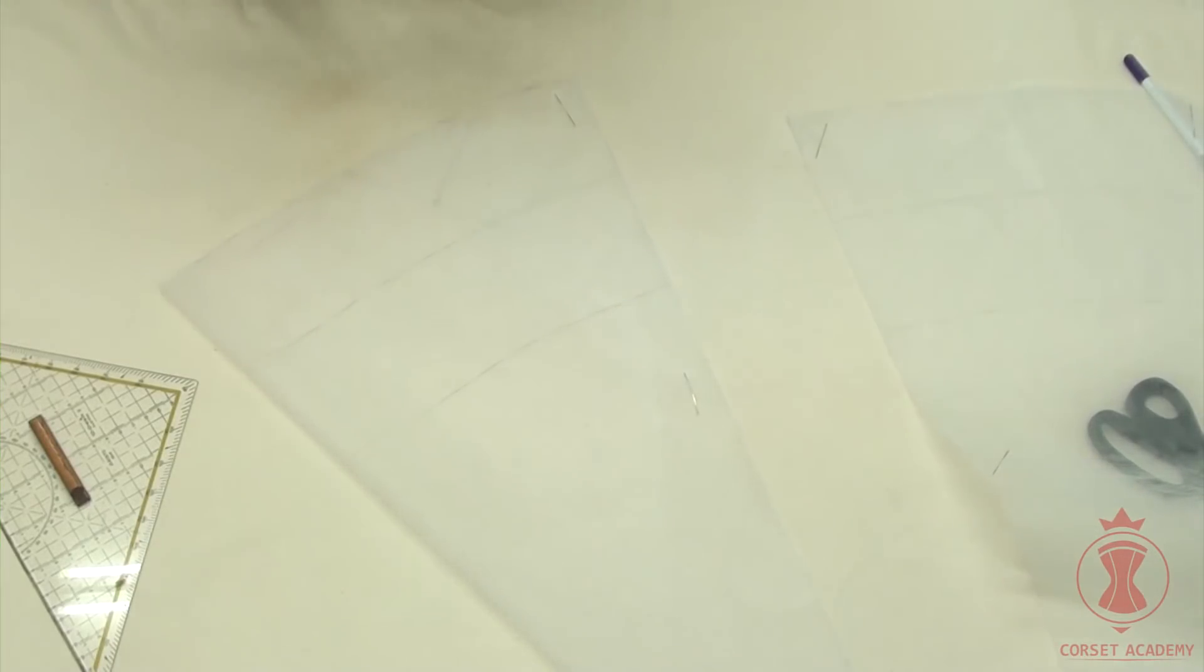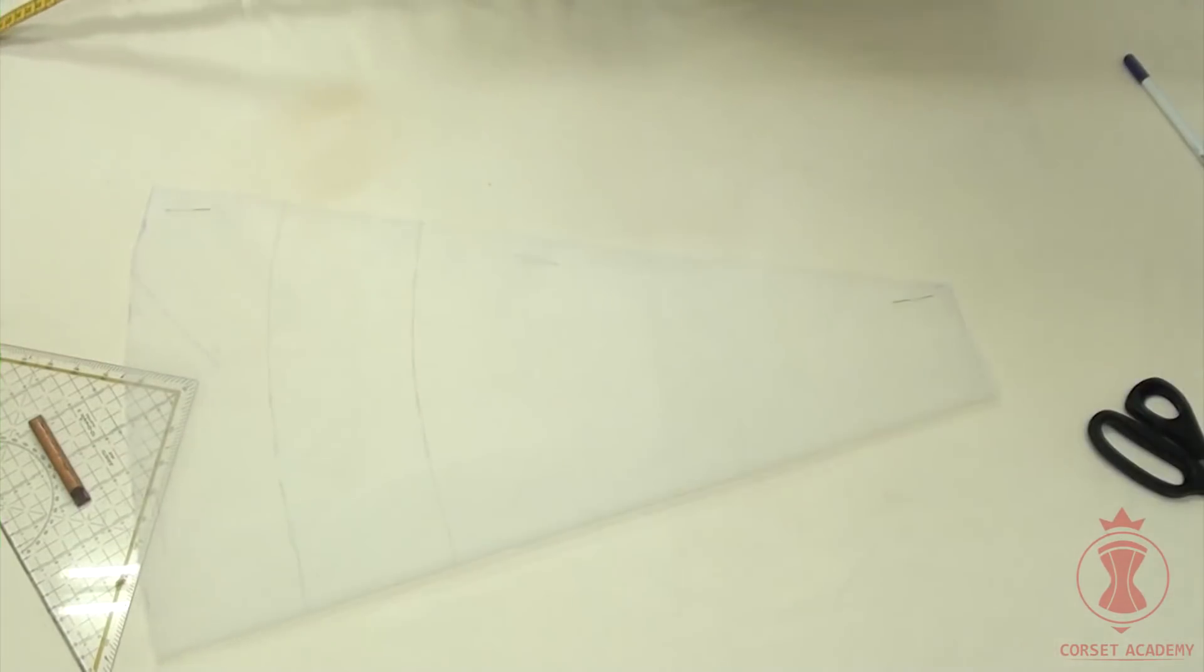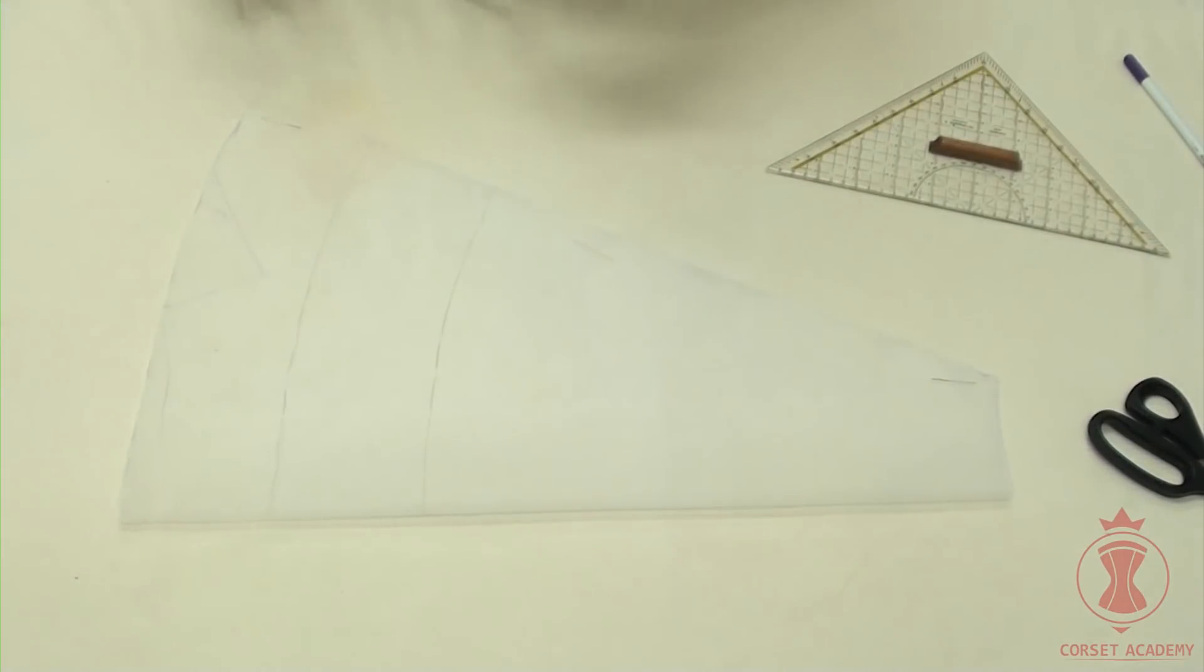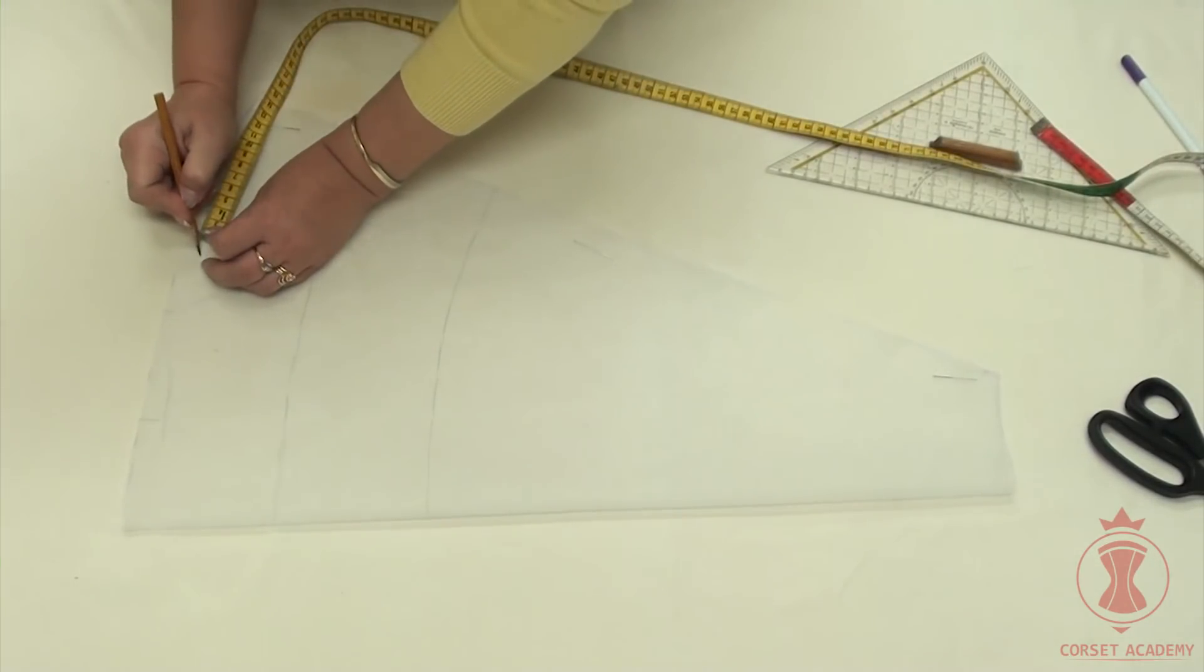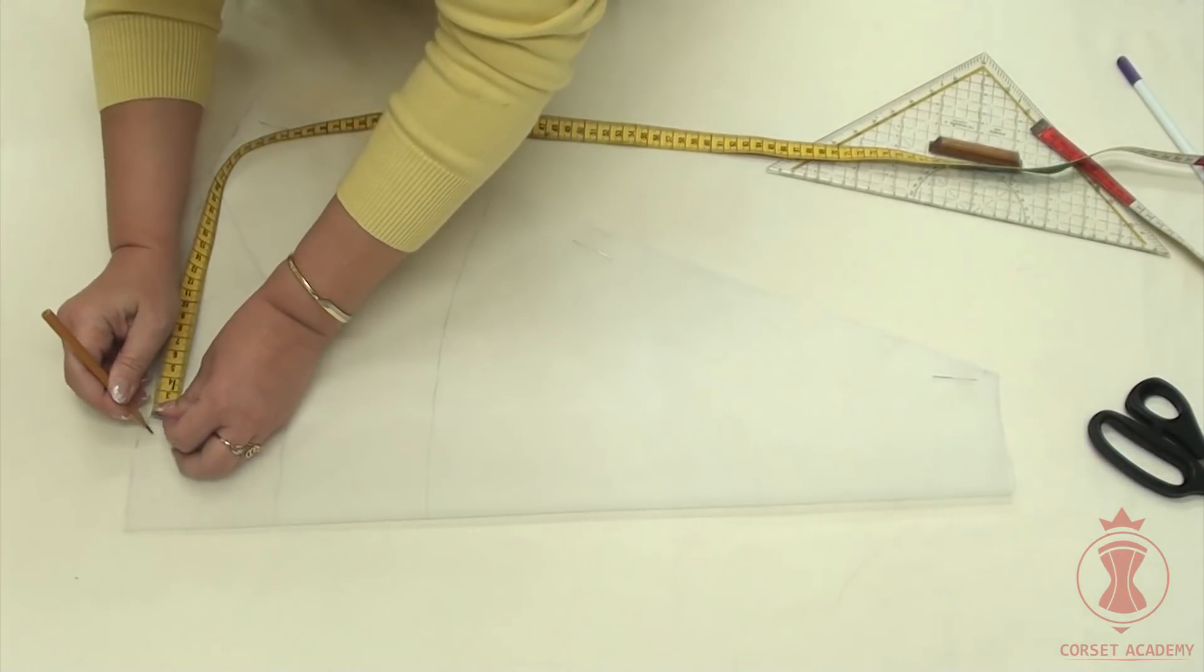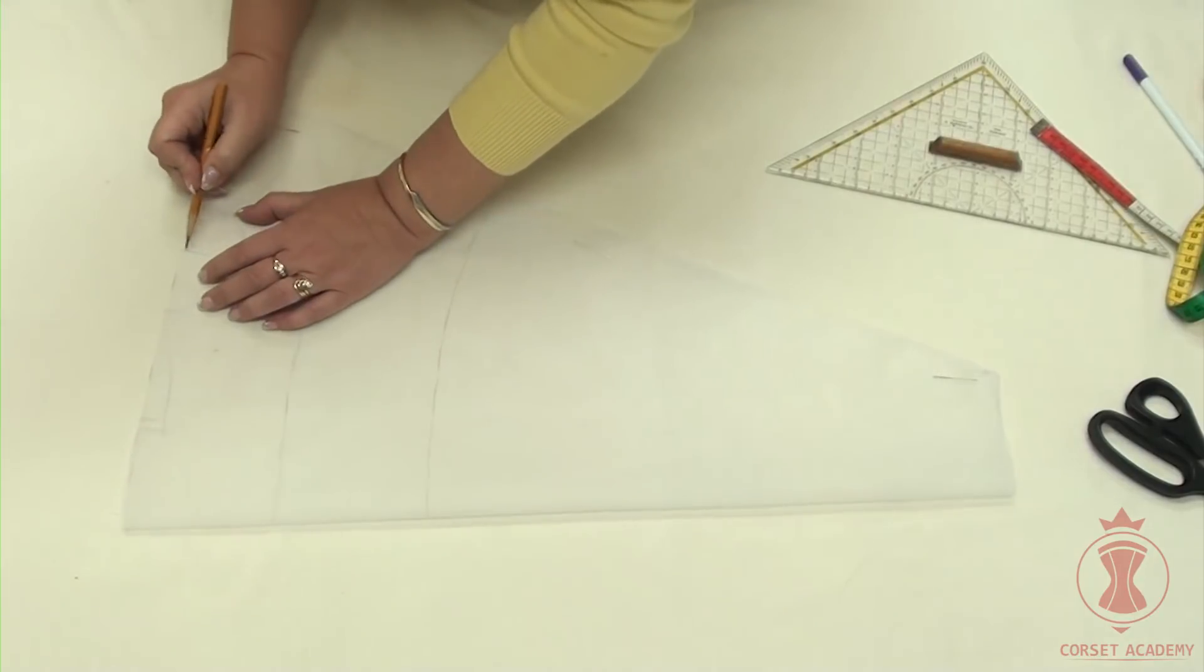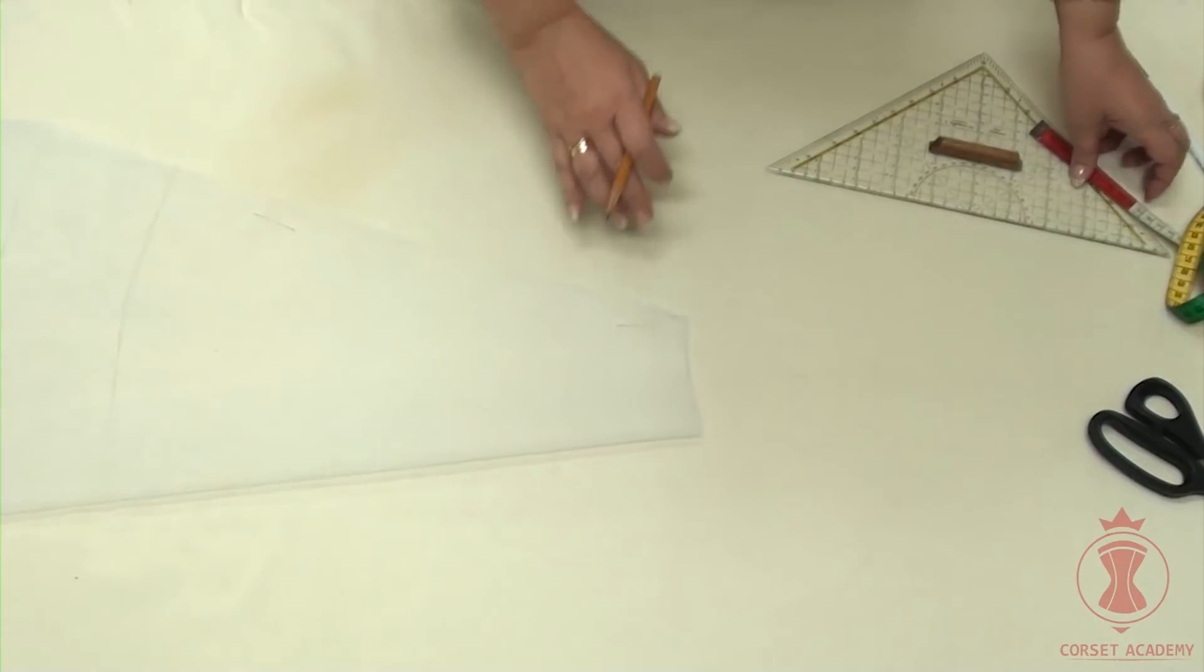Gores should also be marked in advance. The front of the petticoat will be divided in 5 gores and the back in 3. I mark gore points on the front piece at 15 cm intervals along the bottom edge and 4 cm intervals along the top edge.